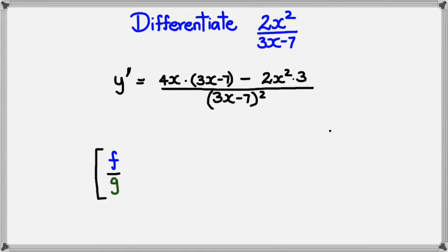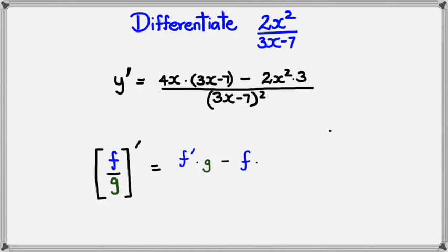If we have f divided by g and we want to differentiate it, notice that 4x is f-dash — the derivative of the numerator 2x squared. We leave the denominator as g, which is 3x minus 7, and it's minus. Then 2x squared is f — the numerator itself — multiplied by g-dash, which is 3, the derivative of the denominator 3x minus 7. And that's all divided by g squared, which is 3x minus 7 squared. That is the quotient rule formula.